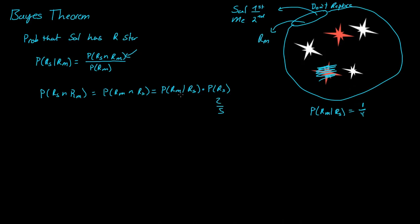Now what's the probability that I get a red star given that Sal got a red star? Well, that's one-fourth, as we calculated right here. So this is equal to one-fourth times two-fifths, which is two-twentieths or one-tenth. So the probability that Sal got a red star and I got a red star is one-tenth.